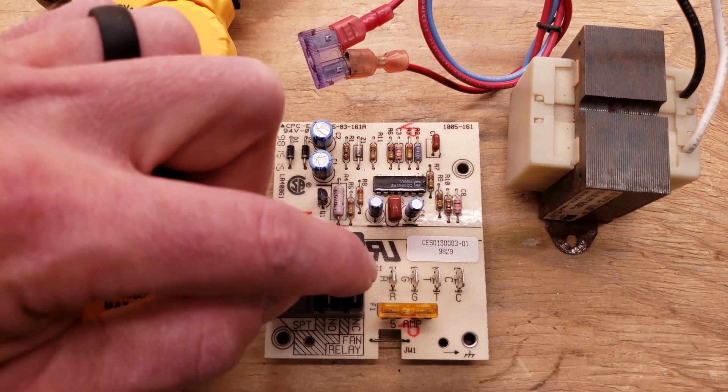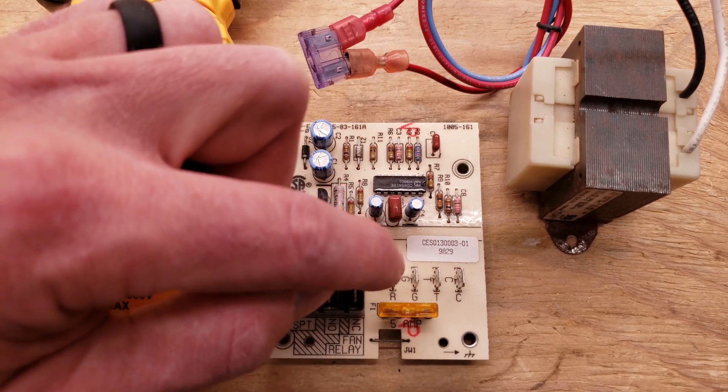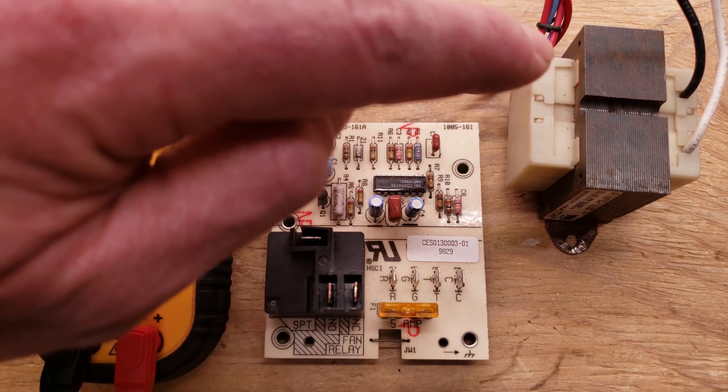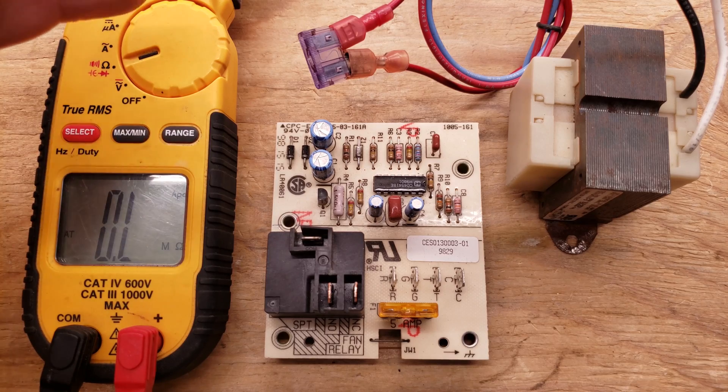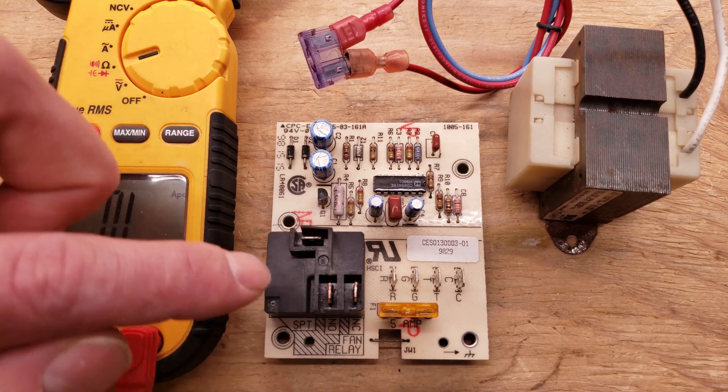We're going to be going over the low voltage thermostat wire connections, and we're actually going to be applying 24 volts with this transformer and measuring our resistance value across the contacts of the blower relay.